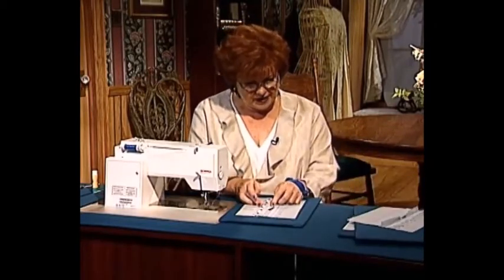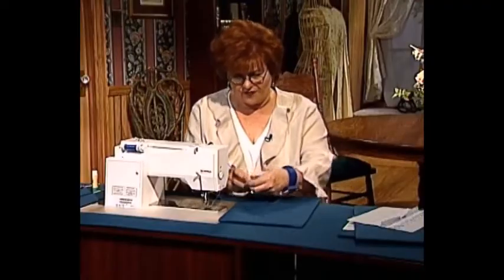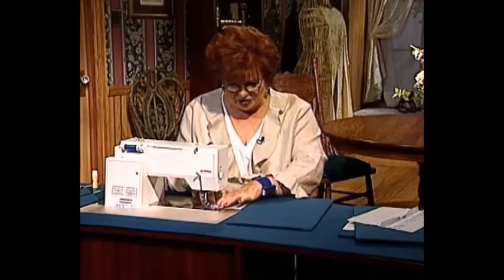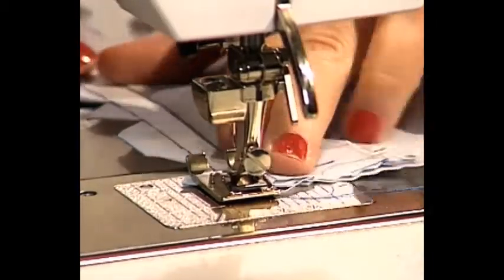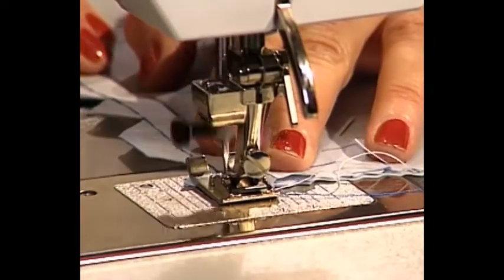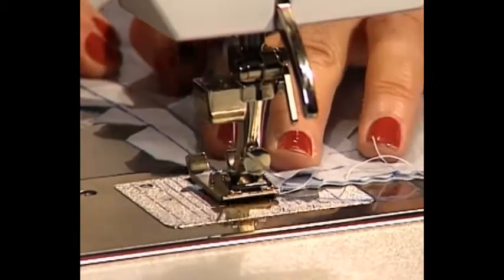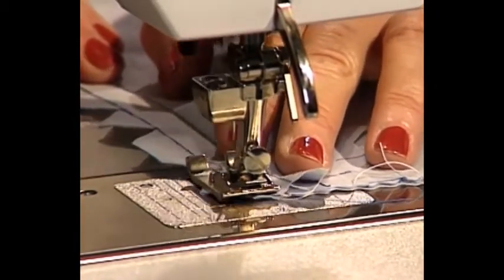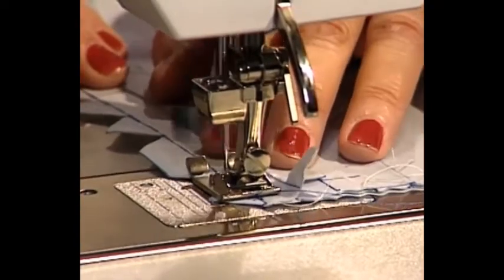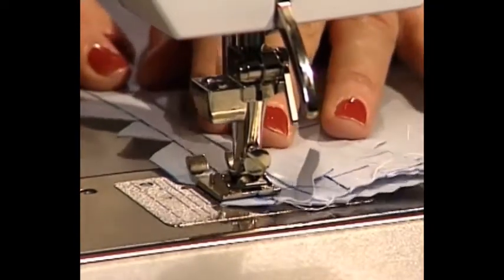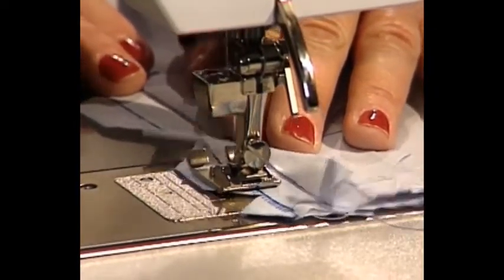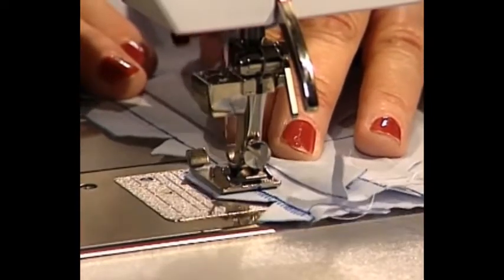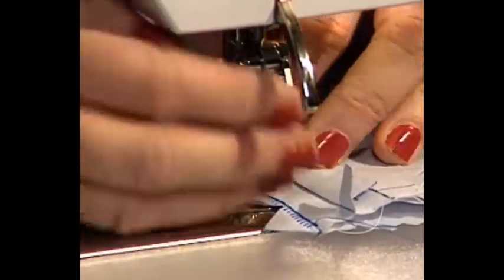Now, I've gone ahead and folded my tucks on this row right here, and I'm going to show you one way you can stitch them. I've already have glue stick on them. I have my machine set on a pin stitch, and here we go. I'm going to sew where the outside of the pin stitch runs right along the stitching line where I made my tuck, and the little fingers go over to grab the shark's teeth. Now, this is where you lay it out flat. This is one way of stitching the shark's teeth.